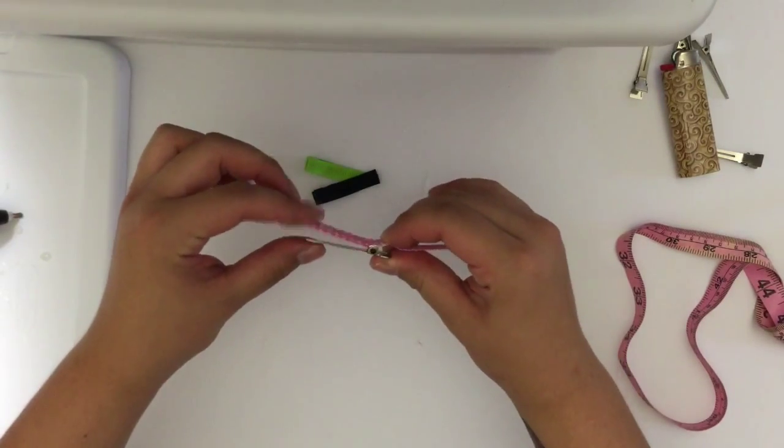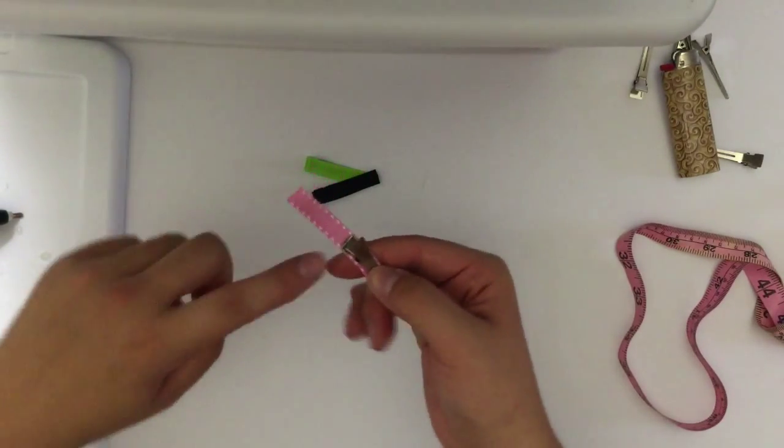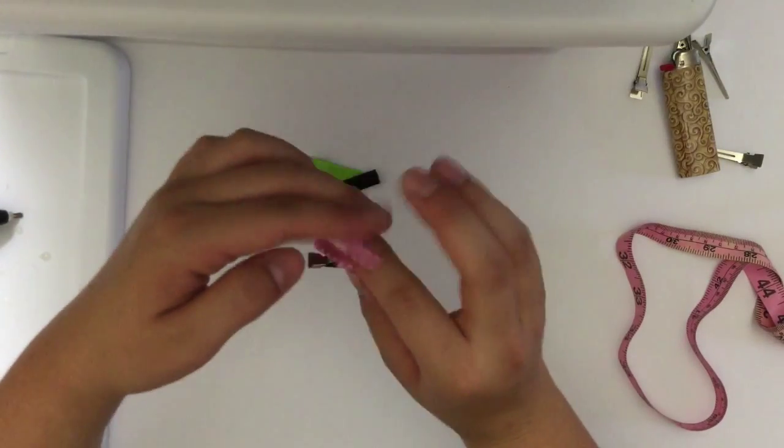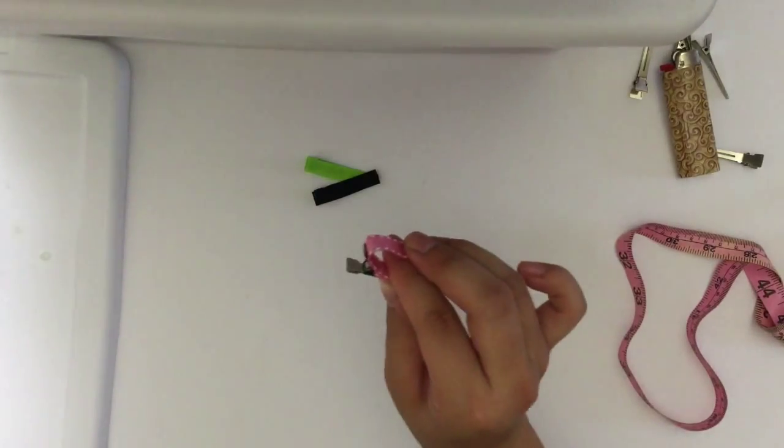Next step is you will be placing a dot of glue on both sides of the back of the clip. You want to do just a small little dot on each side.